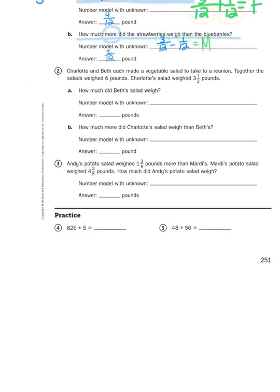And real quickly, down at the bottom, we have a couple of multiplication problems. These are multi-digit numbers that need to be multiplied. So let's actually look at the first problem, 826 times 5.